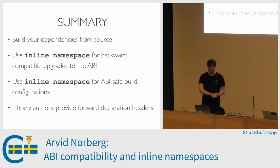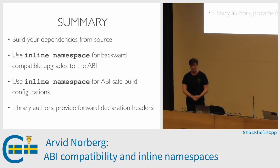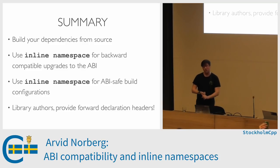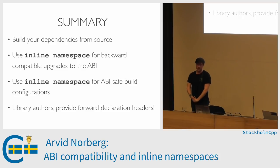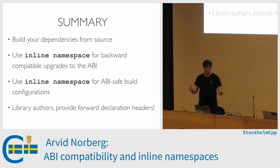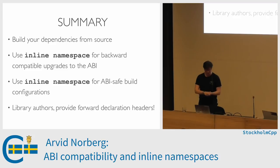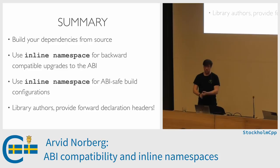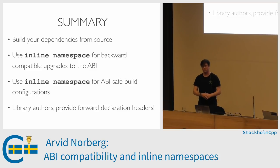We're at the end of the talk. If you're going to remember anything, these are the things: always build your dependencies from source. If you are writing a library, use inline namespaces to encode the version of your functions and classes so that you can change it in the future when you make ABI-altering changes. And if you're a library author, provide forward declaration headers so that your users can get a small header to include instead of pulling everything in.